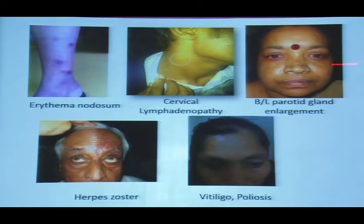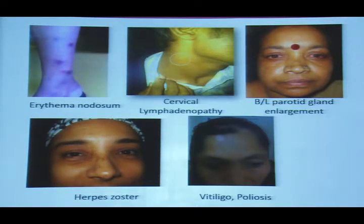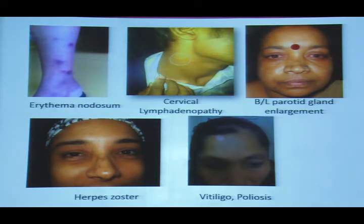Bilateral parotid enlargement is seen in sarcoidosis. Herpes zoster may leave old scars that are subtle and need to be looked for. Vitiligo and poliosis are seen in VKH patients.